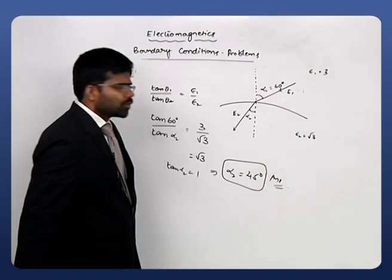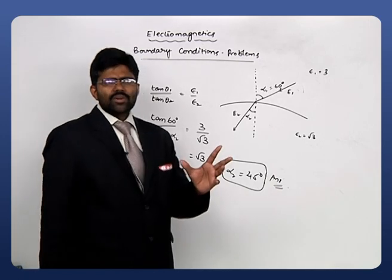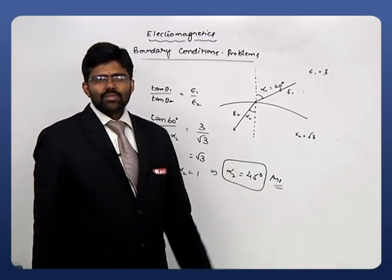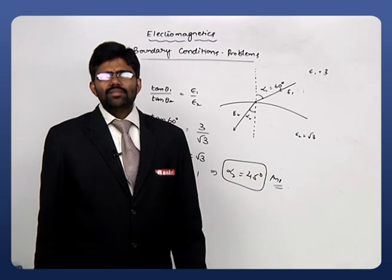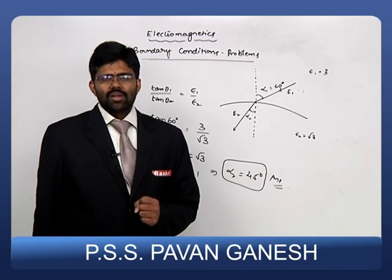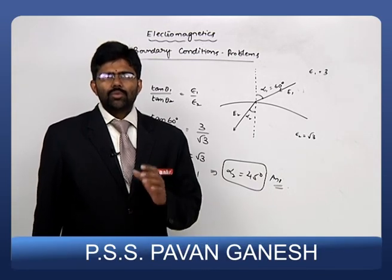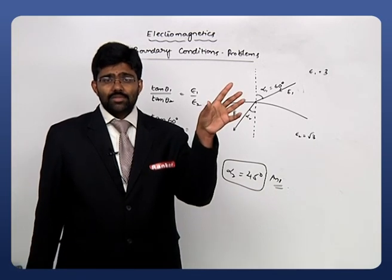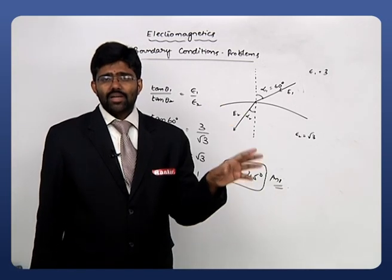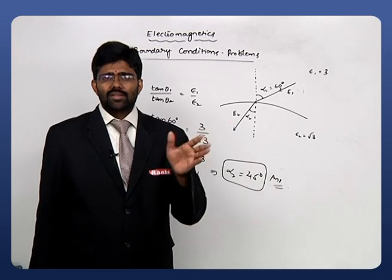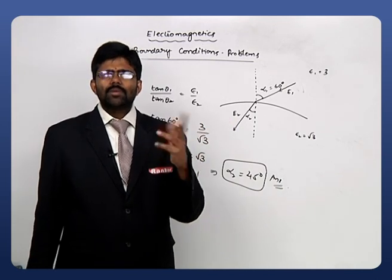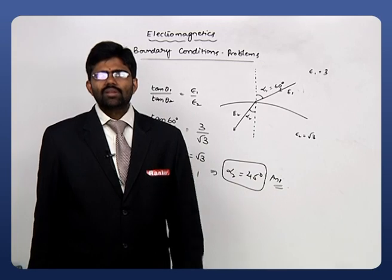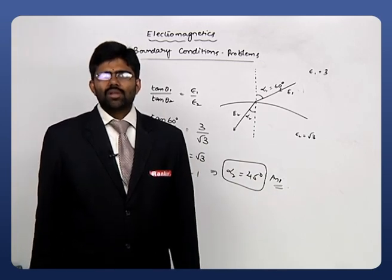This is a very simple problem. If you know the law of refraction for electric fields, it is very easy to solve. Different problems will be given for boundary conditions depending purely on the boundary conditions satisfied for electric field and magnetic field. We need to remember the relation between tangential and normal components.